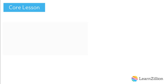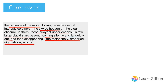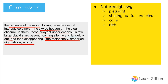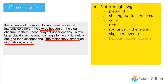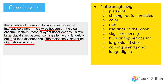I did the same thing with the description of the night sky. I noted the radiance of the moon, then the heavenly sky, and the buoyant upper oceans. Whitman is comparing the sky to oceans that float in the sky. I also noted the large placid stars. When Whitman uses the word placid to describe the stars, he is saying that they are tranquil. Some other descriptions I underlined include coming silently and languidly — so if the stars are languid, then they are coming out slowly. The final description I underlined was the melancholy drape of night above.